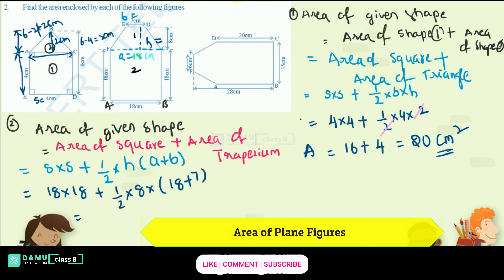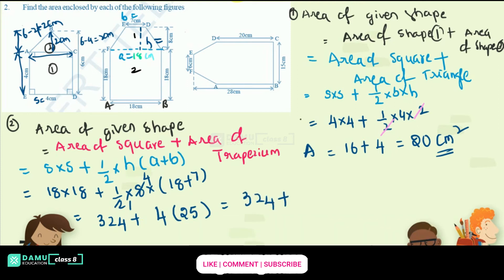So, 18 × 18 = 324. Then half × 8 × (18 + 7): the 2 cancels giving 4, and 18 + 7 = 25. So we get 324 + 4 × 25 = 324 + 100 = 424 centimeters square. That is our answer for the second shape.